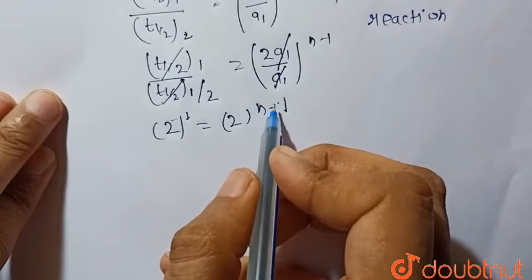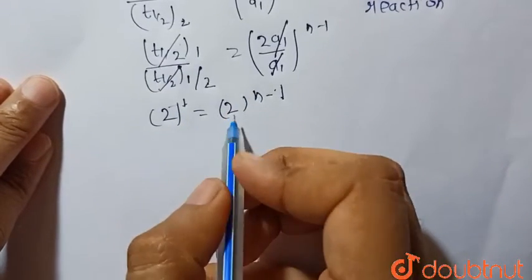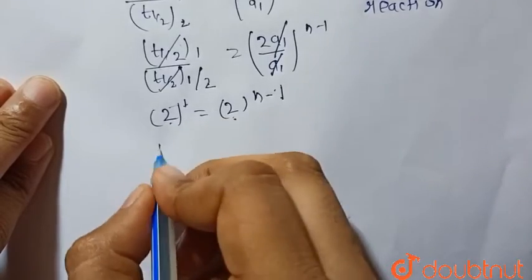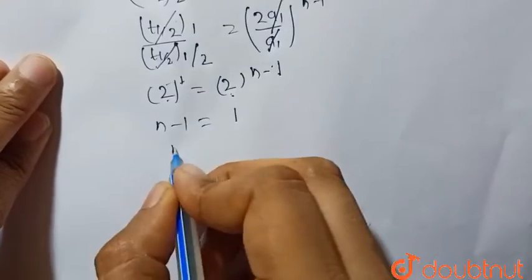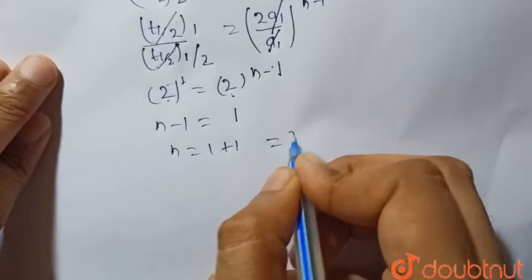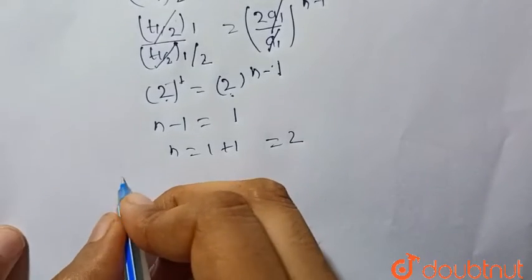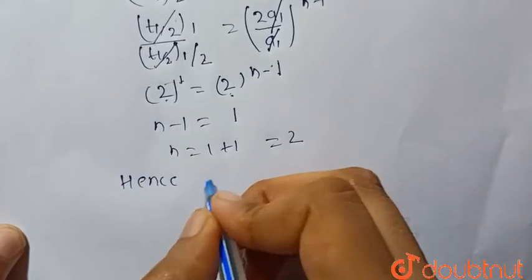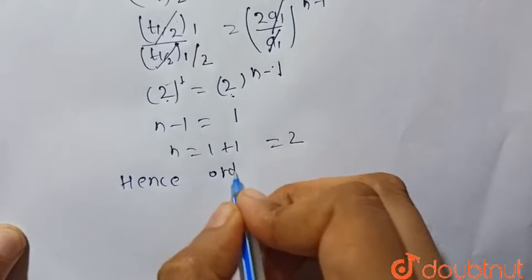Exponent or the power - because base is same, so n-1 is equal to 1, so n is equal to 1+1 is equal to 2. Hence, order of the reaction is...